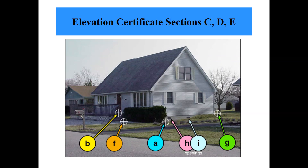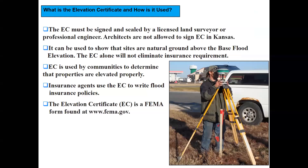One of those sections, Section G, is when a community official includes information on the elevation certificate after a surveyor has filled it out. We just don't see that happen very much.